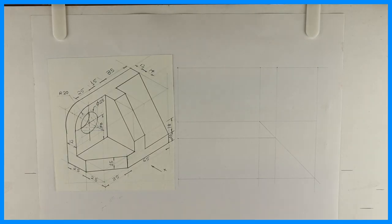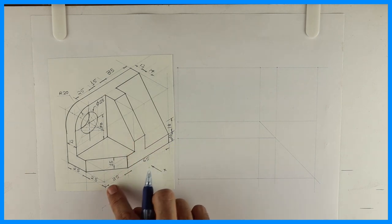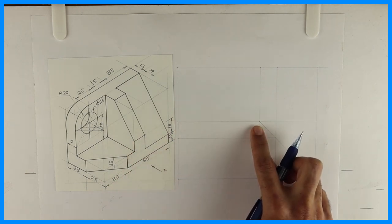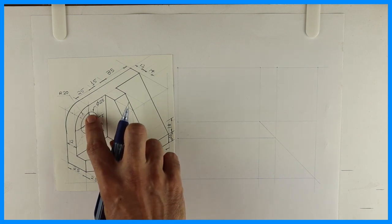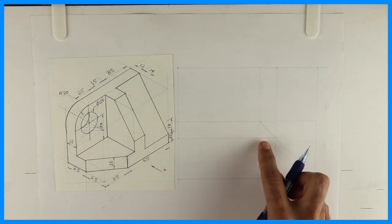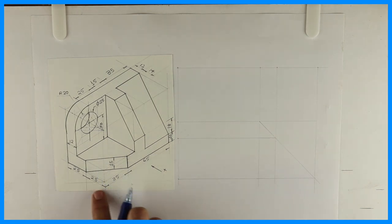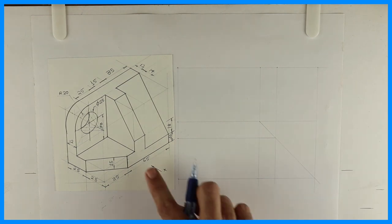Welcome to technical drawing. Today we are going to solve orthographic projections. We will draw front view, top view, and left inside view. The dimensions are: length is 100, height is 15 plus 30 plus 20, that is 65, and width is 50, 25 plus 25. First we will draw the layout using the first angle method.